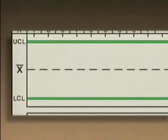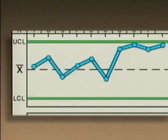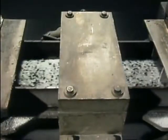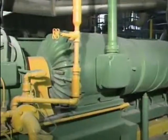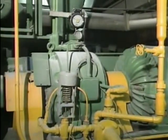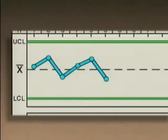Another pattern that indicates a problem is a jump or level change. A jump is evident when the plotted points on a control chart that are randomly falling around the process centerline suddenly shift toward the upper or lower control limit. There are many reasons why a jump can occur, including a change in the materials entering a process or a change in conditions upstream. For example, if the temperature of the material entering a process suddenly increases, it can cause a noticeable jump in the plotted values on the control chart.